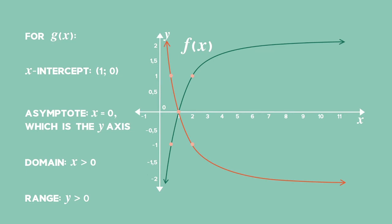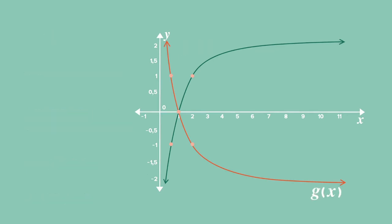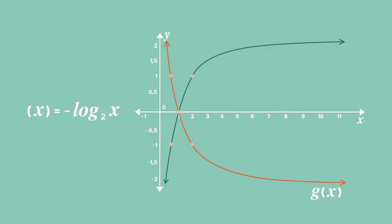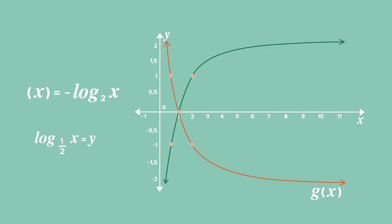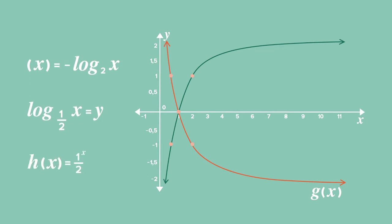Let's examine the equation of the graph g of x a little more. g of x has function values that are all the negative of the y values of f of x. Hence, g of x has equation negative log x base 2. We can rewrite that equation as y equals log x base one half. g of x is the inverse function of the exponential function h of x equals one half to the power of x.